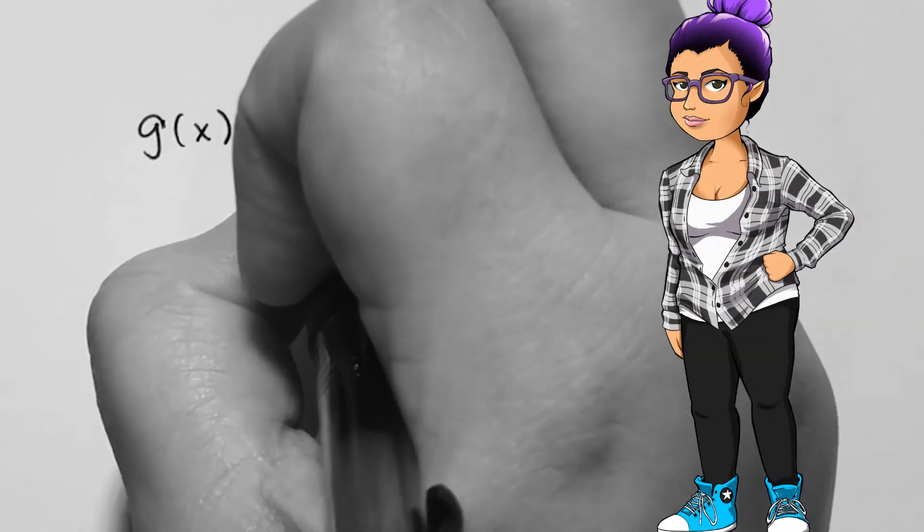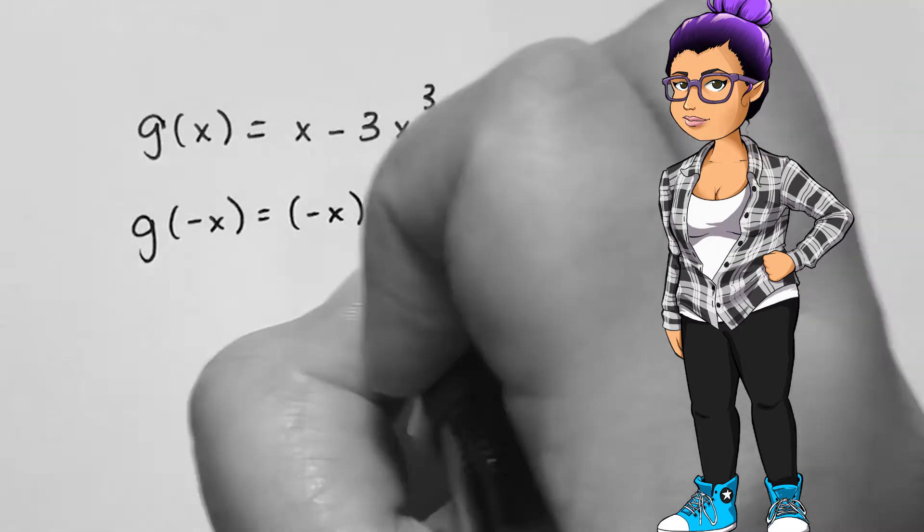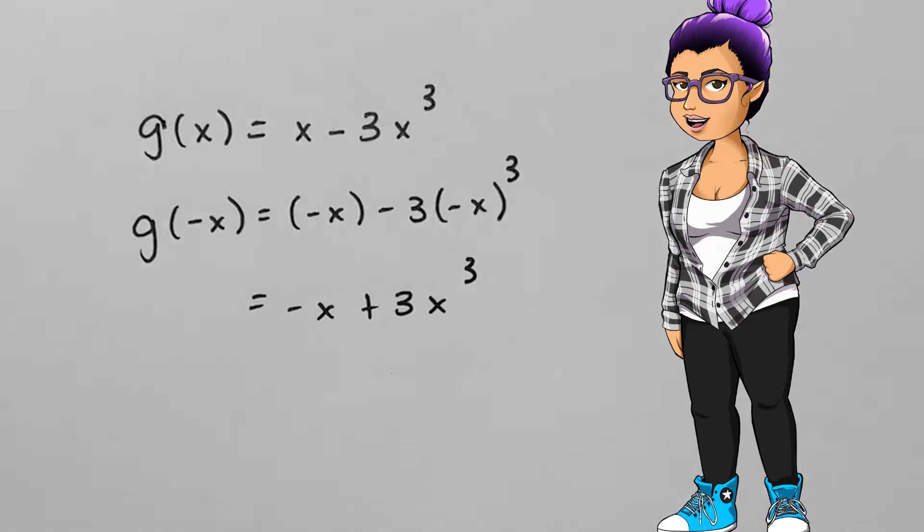Given g of x equals x minus 3x cubed, I plug in negative x and simplify it down. I get negative x plus 3x cubed. This means that g of x is odd.